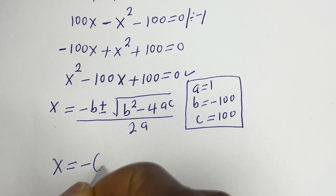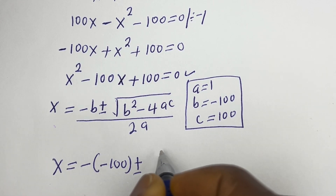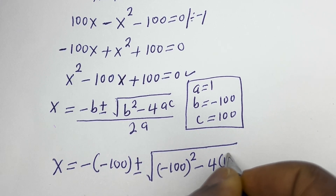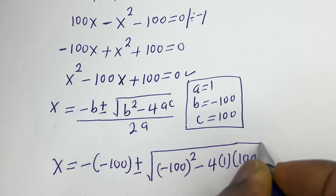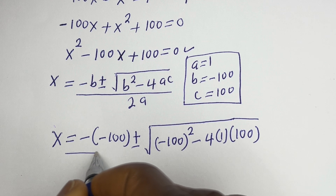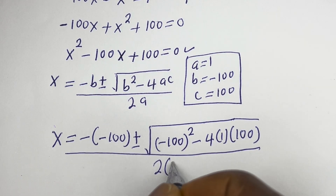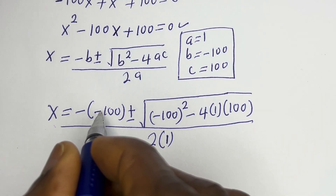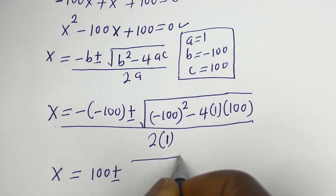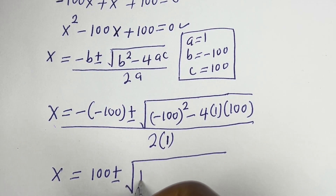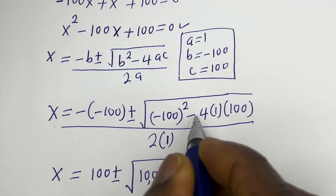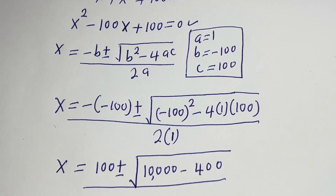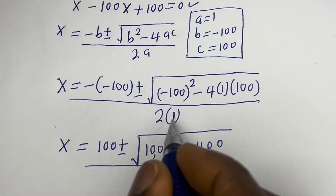x is equal to minus(minus 100) plus or minus square root of (minus 100) squared minus 4 multiplied by 1 multiplied by 100, all divided by 2 multiplied by 1. So x equals 100 plus or minus square root of (minus 100 squared), everything divided by 2.